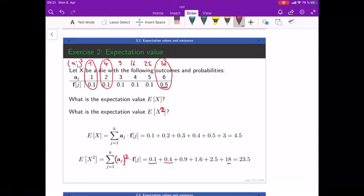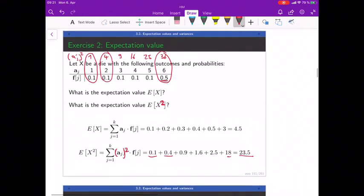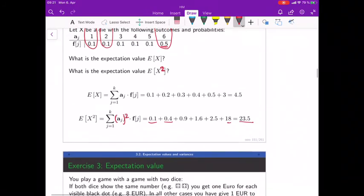Add them all up, use a calculator, and it's 23.5. We're gonna see in a minute that this is part of the calculation for the variance, so we'll need this calculation again.